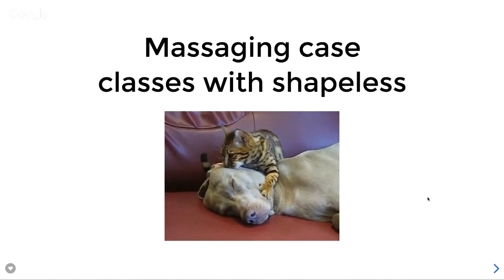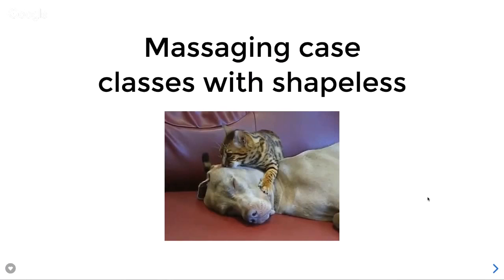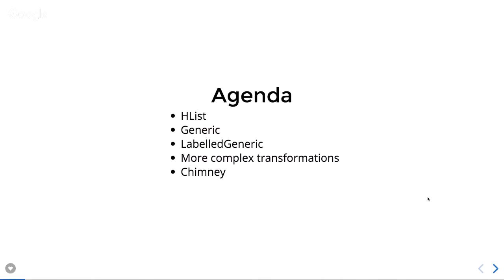This is all about massaging case classes — taking data from one case class into a similar case class that's either exactly the same or quite similar in shape, maybe doing some transformations along the way. We're going to look at HList first, which is one of the fundamental building blocks of Shapeless. If you're going to do anything with Shapeless, you need to understand HList.